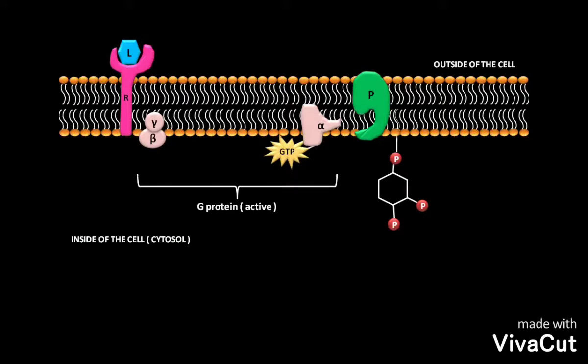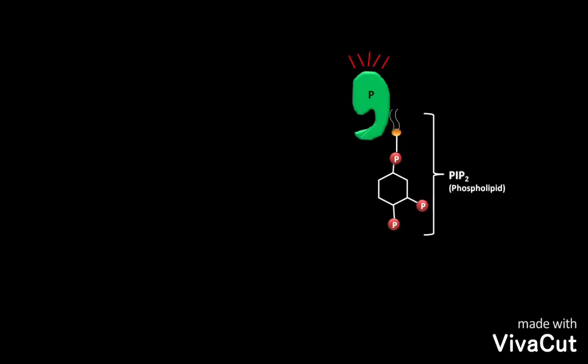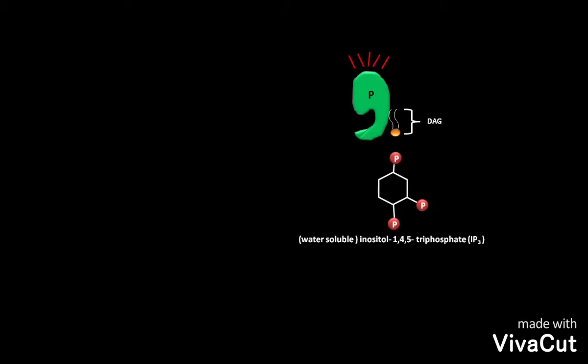The P in the GP stands for activation of phospholipase C. The active GP then activates a form of phospholipase C known as C-beta. The active C-beta then cleaves phosphatidylinositol-4,5-bisphosphate or PIP2, a phospholipid present in the plasma membrane, into diacylglycerol or DAG and inositol-1,4,5-triphosphate or IP3. The IP3 is water-soluble in nature.